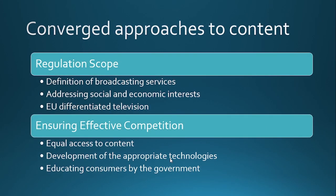Next is the converged approaches to content. First is the scope of regulation — the scope definitions of broadcasting services addressing a number of social and economic interests such as plurality, cultural diversity, national identity, and standard of decency. The European Union differentiates between scheduled and non-scheduled television. We also need to ensure effective competition where there has to be equal access to content to provide competitive offers, and development of appropriate technologies and services on the digital dividend spectrum. The government can also start by educating consumers properly, reducing switching costs, and simplifying bureaucracy for new players.